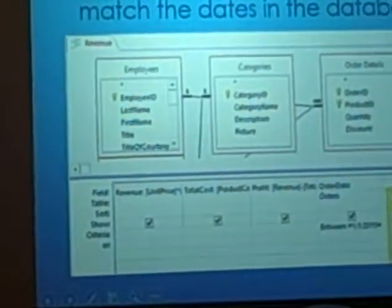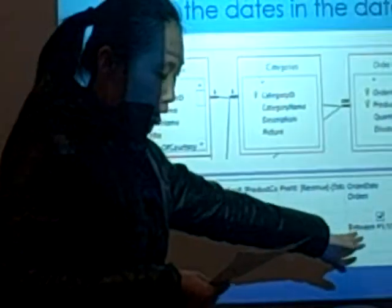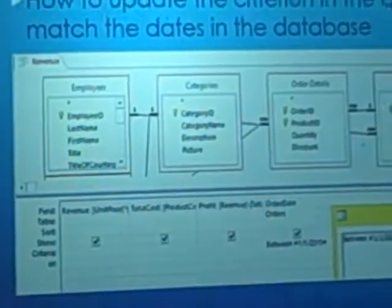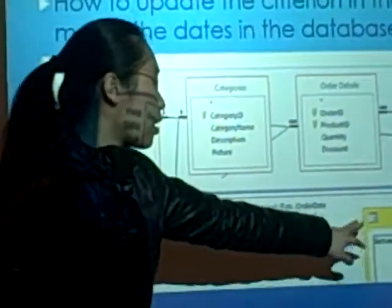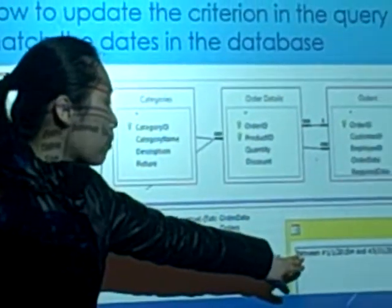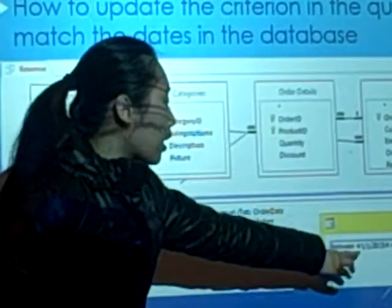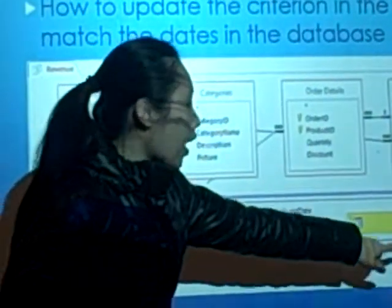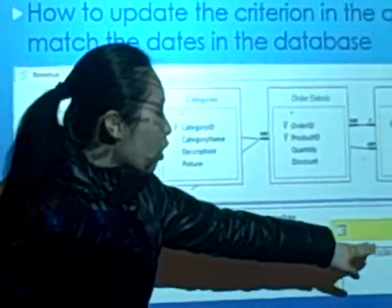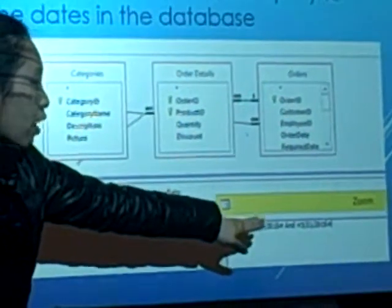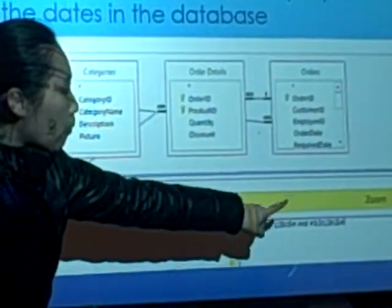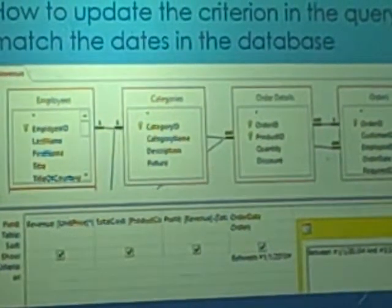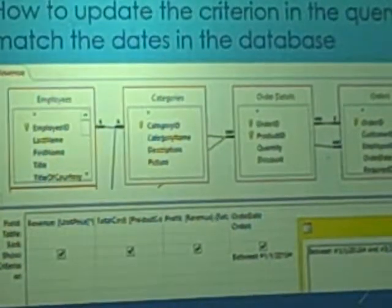Find the order date field — it's right here. Then right-click the criteria and go to the zone to get this field. Then type in: between #1/1/2015# and #3/31/2015#. When you press Enter, just click OK. Then you can run it and get the results.